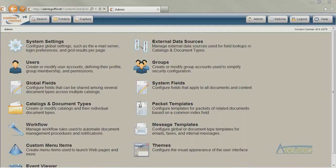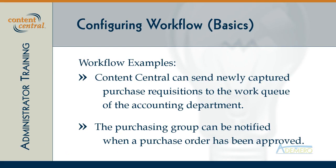You can configure Content Central to perform many actions automatically using workflow. For instance, you can configure Content Central to send all purchase requisitions to the accounting group's work queue as soon as they arrive in the system. You can also tell Content Central to send an email message to the purchasing group's email address whenever a purchase order is approved.